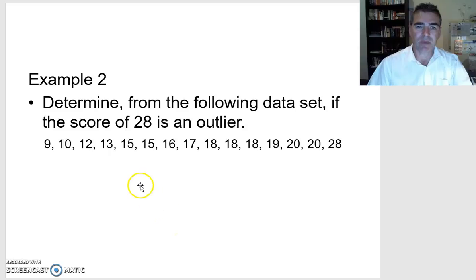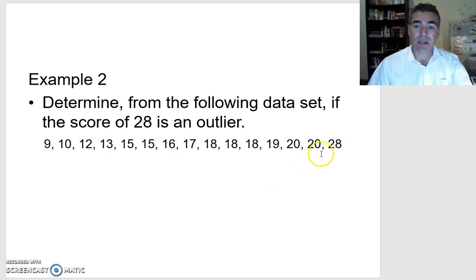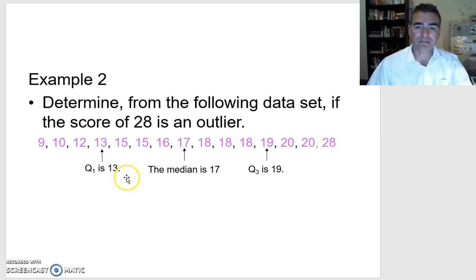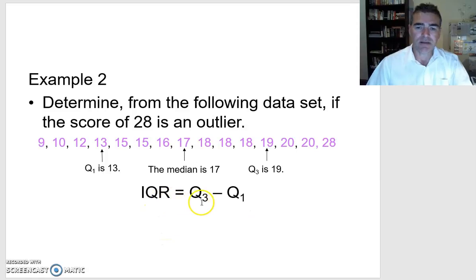So let's have a look at a second example. We want to determine from the following data set — the scores are already placed in ascending order — whether a score of 28 is an outlier. It looks like it's well above all the other scores, but we need to use the formula to check. We need the lower quartile, upper quartile, and interquartile range. Our lower quartile is 13, our upper quartile is 19, so our interquartile range is 19 minus 13, which is 6.